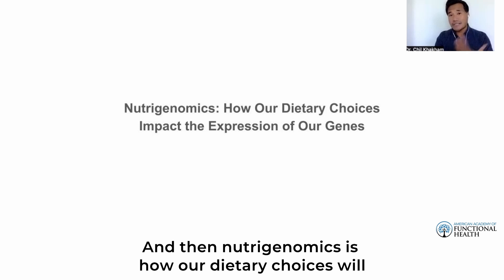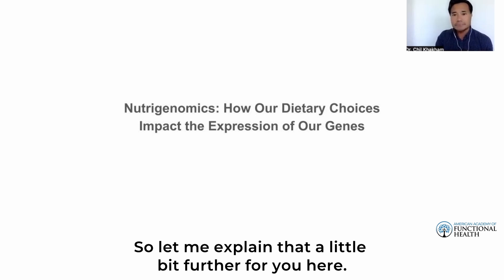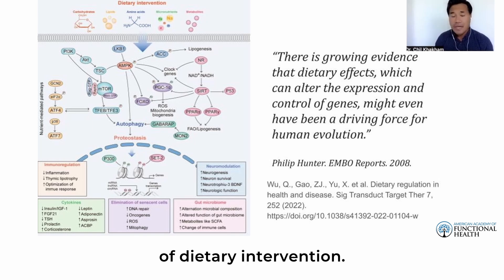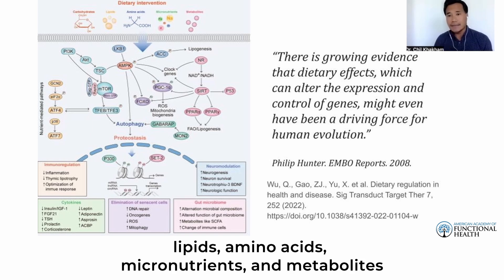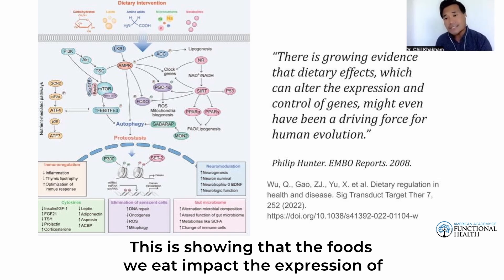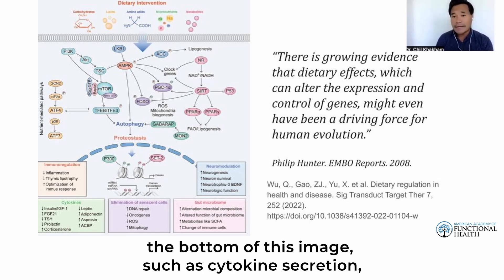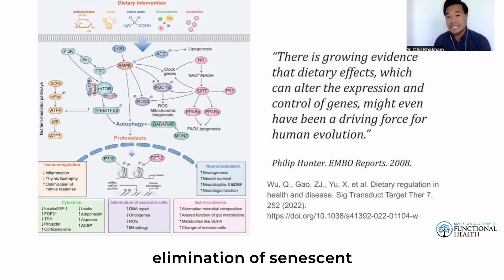Nutrigenomics is how our dietary choices impact the expression of our genes. In this image we can see the molecular mechanisms of dietary intervention. You can see numerous nutrients including carbohydrates, lipids, amino acids, micronutrients, and metabolites on top of the activation of multiple biochemical pathways. This shows that the foods we eat impact gene expression and can influence downstream effectors such as cytokine secretion, immunoregulation, gut microbiome homeostasis, elimination of senescent cells, and neuromodulation.